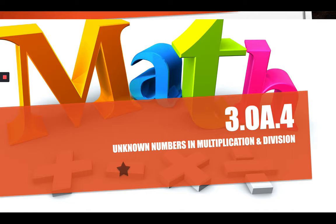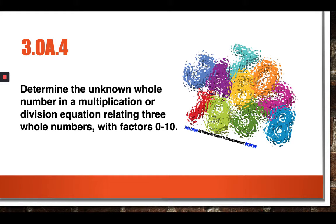This video is going to focus on 3.OA.4, finding unknown numbers in multiplication and division. 3.OA.4 is a third grade standard that asks students to determine the unknown whole number in a multiplication or division equation when there are three whole numbers present, and we're only dealing with factors 0 to 10.